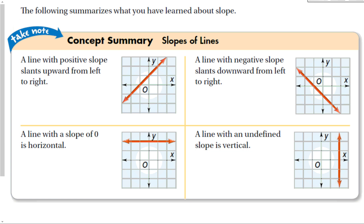Let's summarize what we've learned about slopes. Reading all graphs from left to right: a line going up has a positive slope; a line going down has a negative slope; a horizontal line has a slope of 0; and a vertical line has an undefined slope.